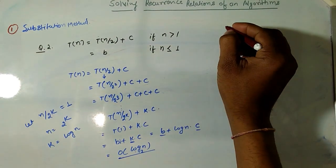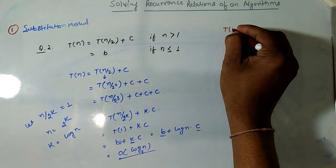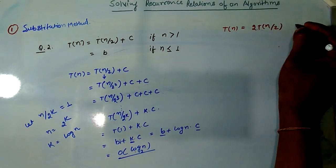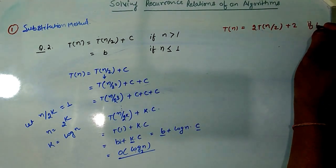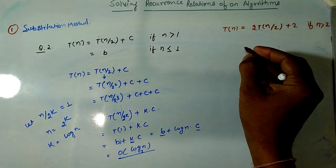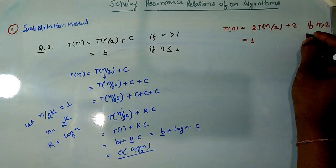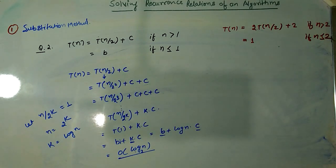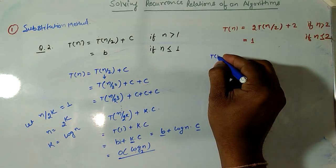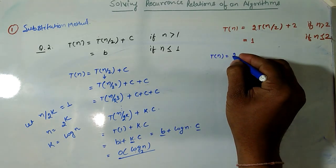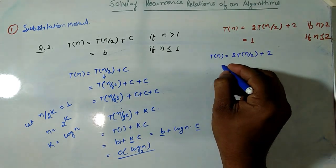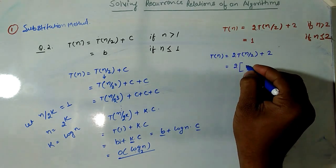Let's solve another example: T(n) = 2T(n/2) + 2 if n is greater than 2, and T(n) = 1 if n is less than or equal to 2. We write T(n) = 2T(n/2) + 2 and substitute the value of T(n/2).